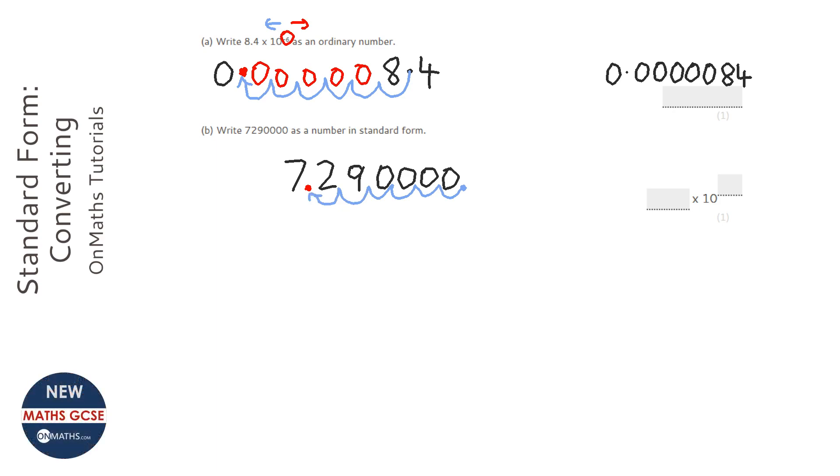Okay, so the rule is that the number has to be between one and ten, which this one is now. If you had a big number then the power of ten will be positive. Now here we did have a big number so it's going to be positive six.